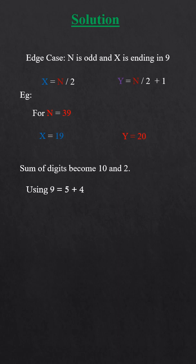Using 9 equals 5 plus 4, we can solve this issue. Remove all ending nines from x, then add 5 to smallest number and 4 to other. Do this for each 9 removed from x.